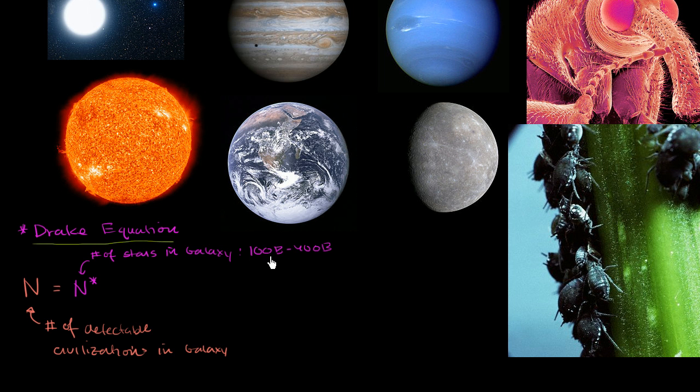Now, obviously, it's going to be a subset of those stars that even have planets. So let's multiply it times that subset, the frequency of having a planet. If you're a star, this is the percent chance, or the frequency, or the fraction of these stars that have planets. So I'll write it this way, fraction that have planets.